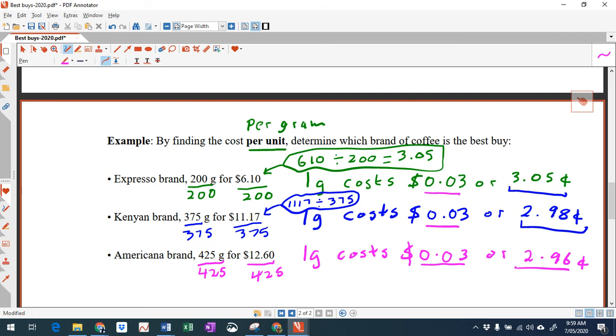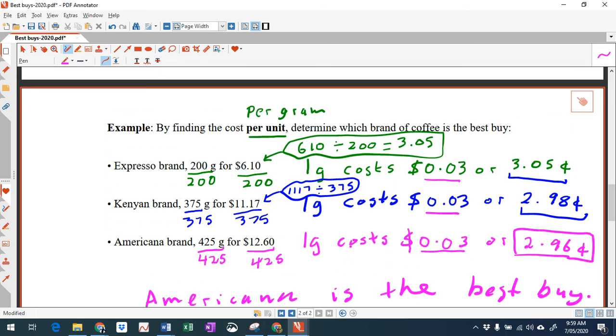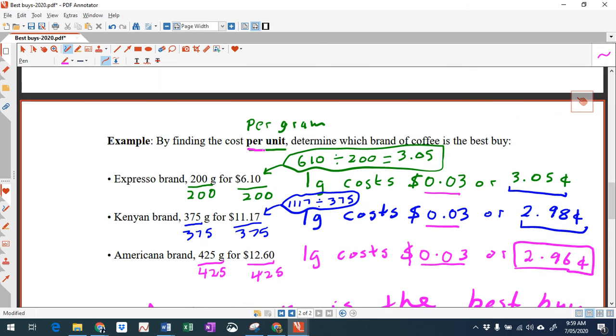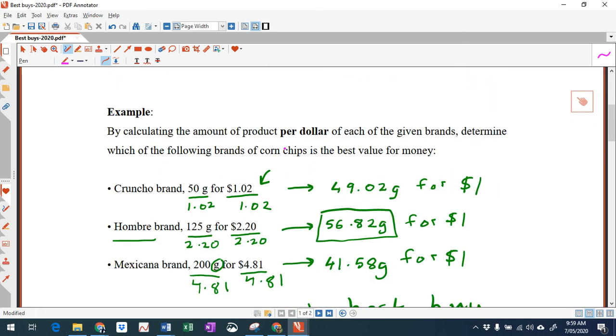So obviously, this is the cheapest. That's the cheapest for 1 gram. So the Americana brand is the best buy. Now, in the exercise, if it doesn't specify to calculate 1 gram or $1, then the choice is yours. So there's two different methods. You find the cost per unit, which is like per gram or per litre or something, or you can find the cost per dollar. The choice is yours if the question doesn't specify.